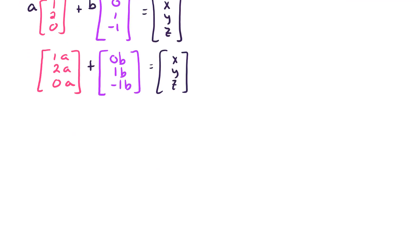Continuing to work through that left-hand side and add things together, what we get is 1a plus 0b, 2a plus 1b, and 0a minus 1b. And supposedly that's going to equal x, y, z.